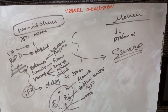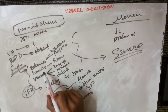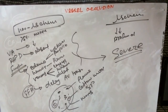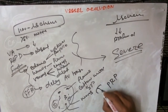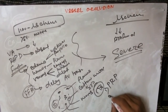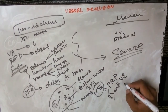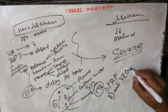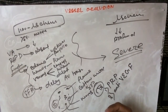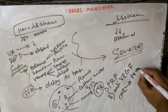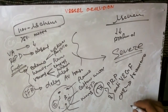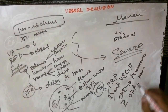Complications include papilloedema, cystoid macular edema, hemorrhage, rubeosis iridis — neovascularization of the iris — and proliferative retinopathy. Treatment includes pan-retinal photocoagulation and anti-VEGF drugs such as ranibizumab and bevacizumab. For cystoid macular edema, intravitreal injection of triamcinolone is important. Radial optic neurotomy may also be performed.